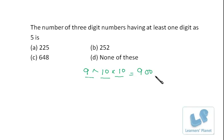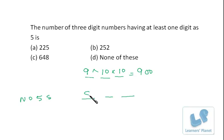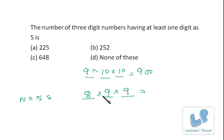Now for numbers with no fives at all — for the first place, I have 10 choices but zero and five cannot come, so I have eight choices. For the second place, I have 10 choices but five cannot come, so I have nine choices. For the third place, I have 10 choices but five cannot come, so I have nine choices. So it's 9 × 9 × 8, that is 81 × 8, which is 648.